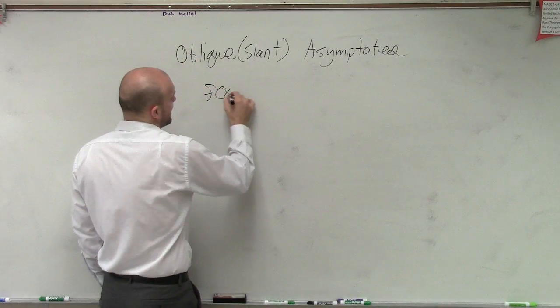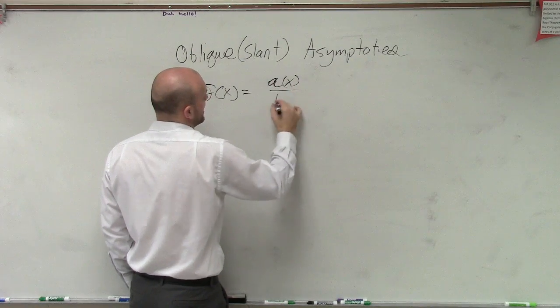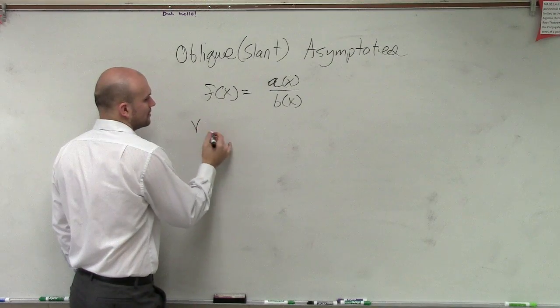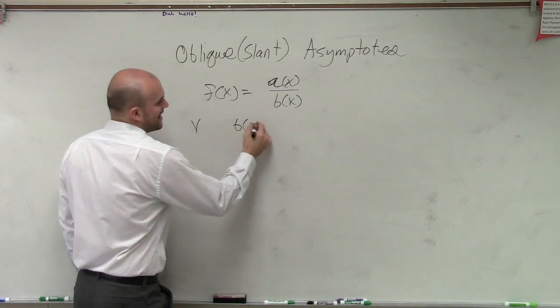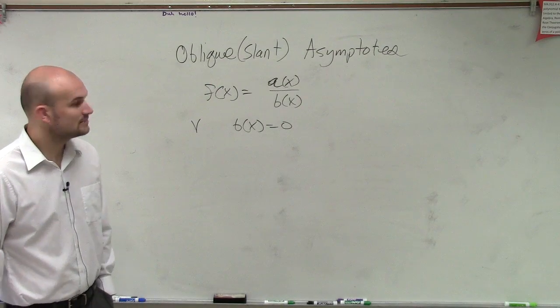Vertical, so if we have a function f of x equals a of x divided by b of x, we said the vertical asymptote is when b of x is equal to 0.